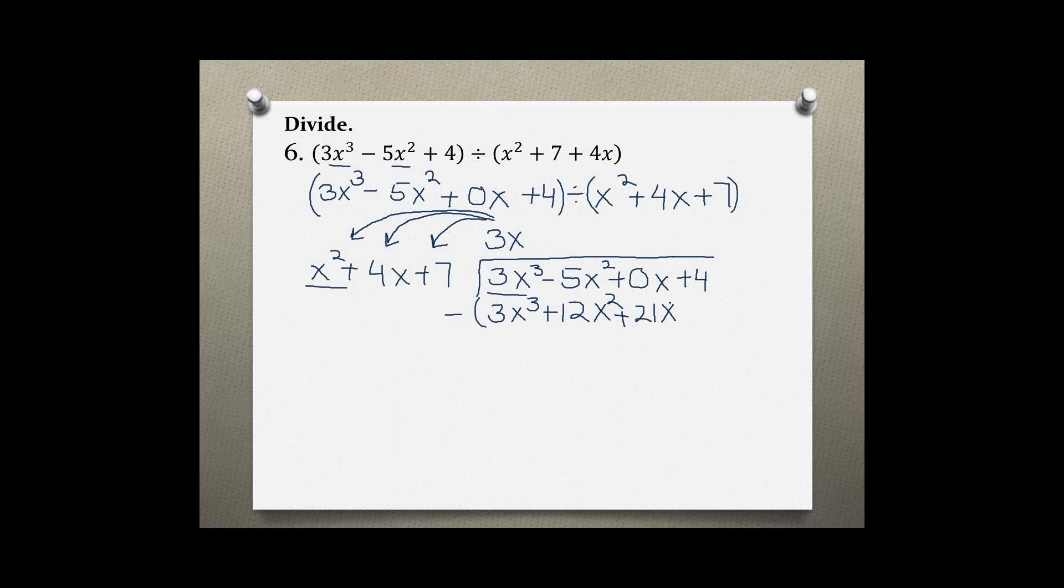Now, subtracting all this down and changing the signs, we get 3x cubed minus 3x cubed is 0, and negative 5x squared minus 12x squared is negative 17x squared, and 0 minus 21x is minus 21x. So, bringing down the remaining term plus 4,